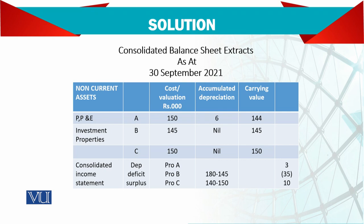Now let's see the chart. Property, plant and equipment: 150,000 is the value and the useful life was 50 years. It was bought on 1st October 2019. Two years have passed up to 2021, so depreciation is 150,000 divided by 50, multiplied by two years, which comes to 6 million. So the carrying value is 144 million. The balance sheet will show this property as owner-occupied property at 144 million, and the 3 million depreciation for the current year will be charged to the profit and loss account — total accumulated depreciation being 6 million.